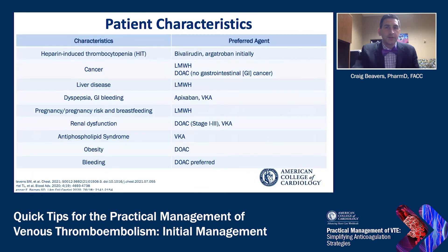Patient characteristics are also important to consider — not just for the initial phase, but when transitioning out of it. For example, if the DVT is cancer-related, depending on cancer type and location, a direct oral anticoagulant could be considered. If the patient has dyspepsia or GI bleeding, apixaban or VKA may be preferred, as rivaroxaban and dabigatran can increase bleeding risk. For antiphospholipid syndrome, VKAs may be the preferred agent. And based on updated evidence, DOACs can be used safely in obesity.